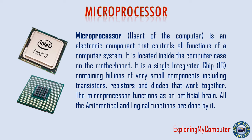The microprocessor, also known as the Central Processing Unit (CPU), is the heart of the computer. It is an electronic component that controls all functions of a computer system. It is located inside the computer case on the motherboard. It is a single integrated chip (IC) containing billions of very small components including transistors, resistors and diodes that work together. The microprocessor functions as an artificial brain; all arithmetical and logical functions are done by it.